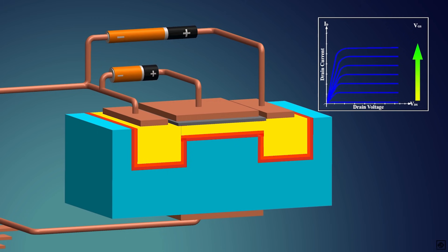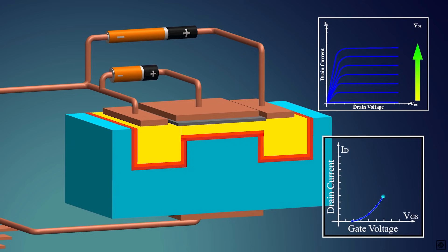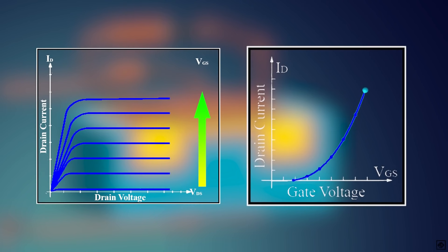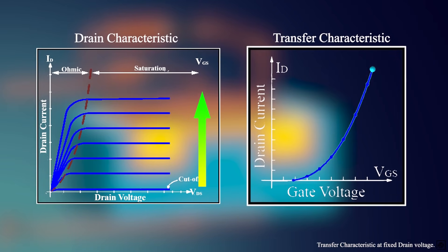MOSFETs are also called voltage-controlled devices because the amount of voltage at the gate controls the flow of current from drain to source. Also, there is no current flow from the gate. The two graphs that we created are the characteristics of the MOSFET: the drain characteristics and the transfer characteristics. There is another type of MOSFET called the depletion type.